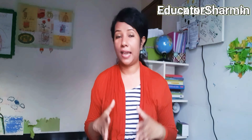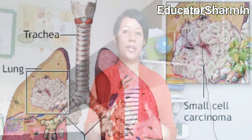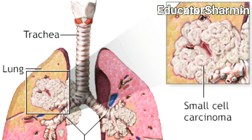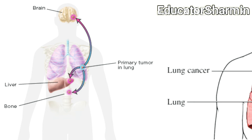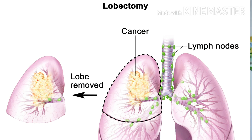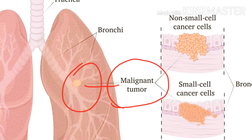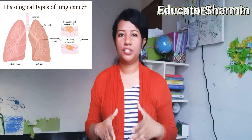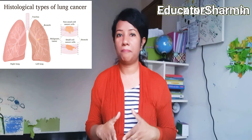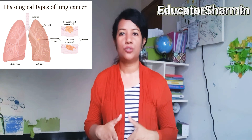As the cancer develops, it spreads through the bronchial epithelium and enters the lymphatic tissues in the lungs. Cells may break away and spread to other organs, so that secondary tumors become established. A tumor like this is known as a malignant tumor.